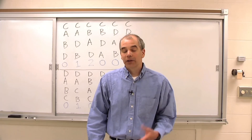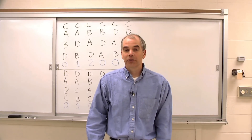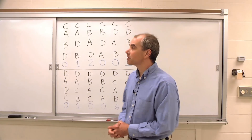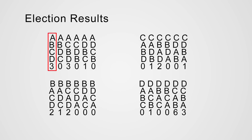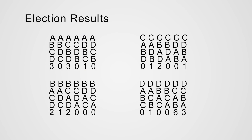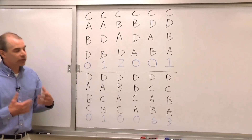Welcome back. While you were casting your votes, we held an election here, and these are the results. You can see that three people voted A, B, C, D; three people preferred A, C, B, D; one person liked the order A, D, B, C, and so on. For example, two people liked C the best, B second best, A third best, and D fourth best. So the question is, how do we decide the election? This is where we want to talk about the different methods.